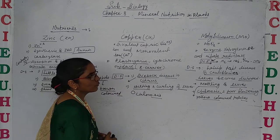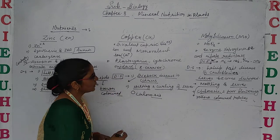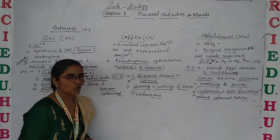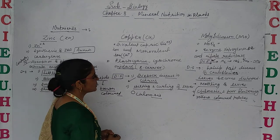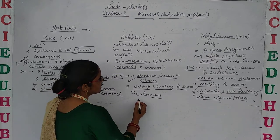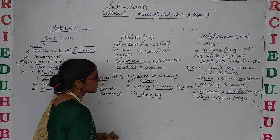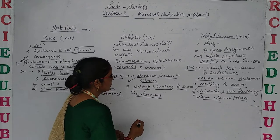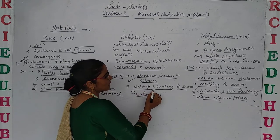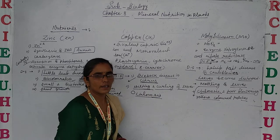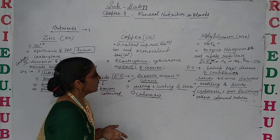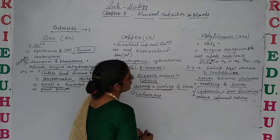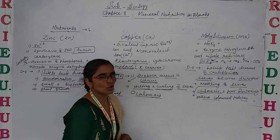Deficiency symptoms of copper: it causes dieback disease in citrus. In dieback disease, leaves show chlorosis and have yellow colored patches. Additionally, there is wilting and curling of leaves — leaves bend down and curl. So these are the deficiency symptoms of copper.